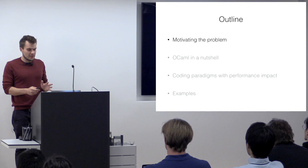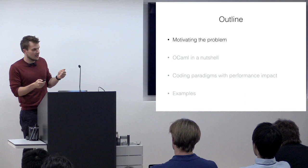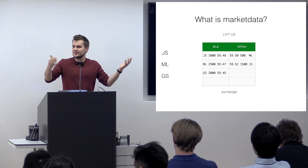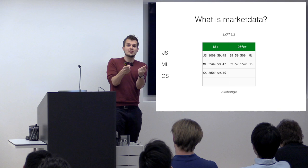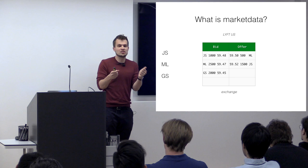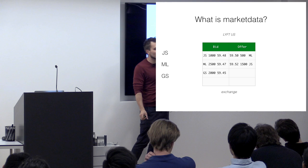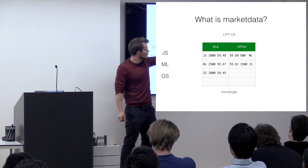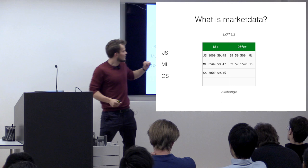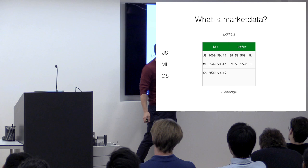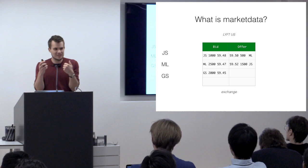To motivate the problem: here at Jane Street we've built and are continuously building systems dealing with what's called market data distribution. In the world of finance, the core thing is there's an exchange that allows you to trade things. The main function of an exchange is to keep what's called a book per stock. The exchange's job is to maintain a list of people's willingness to buy and sell — for example, Jane Street with a quantity at one price, and Merrill Lynch and Goldman Sachs on other sides. The exchange maintains this data structure and lets participants interact with it.